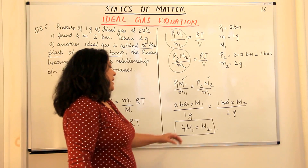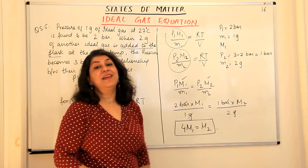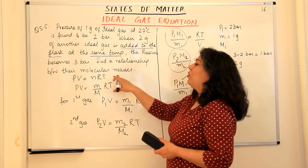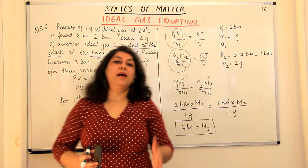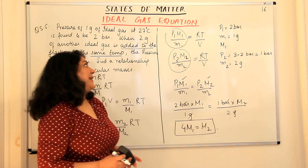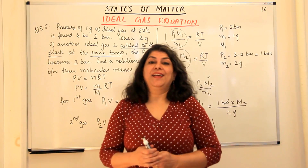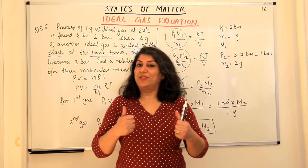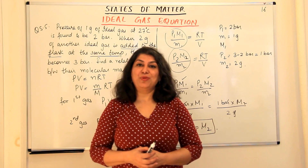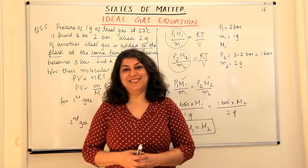The molecular mass of the first gas is 4 times the molecular mass of the second gas — that is the relationship. This was our question: find a relationship between their molecular masses, and the answer is M2 = 4M1. This was the question based on the ideal gas equation. If the video helped you, please give it a thumbs up, subscribe to my channel, recommend it to your friends, and keep returning for more chemistry videos. Thank you for watching, bye-bye for now.